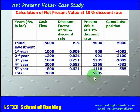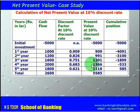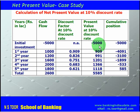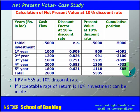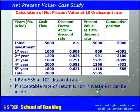The total present value (C1 through C5) of cash inflows is 5585, and the initial investment C0 is 5000. The net present value is therefore 585, which is positive. When it is positive, investment can be made. So at a 10% discount rate, if this rate is acceptable to the investor, he can proceed with the investment.